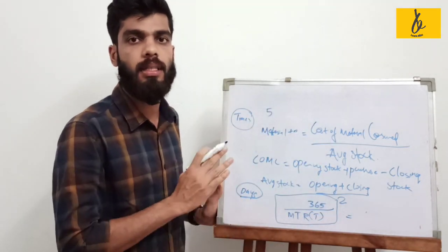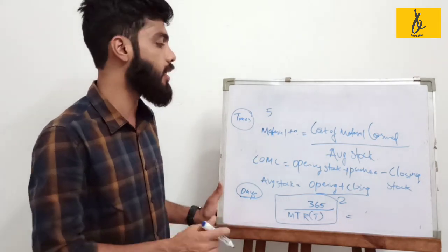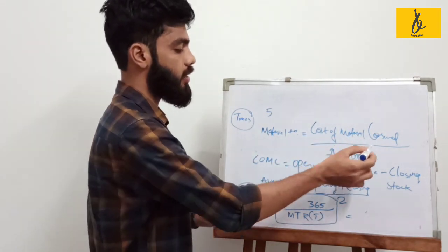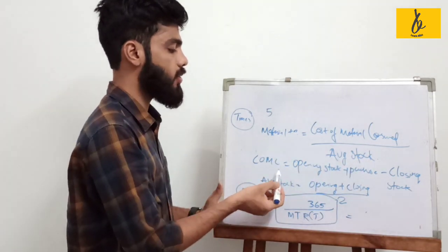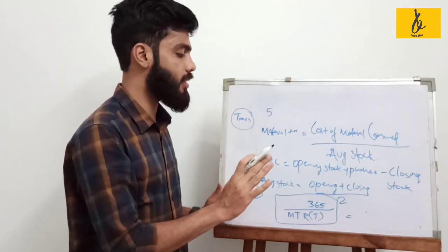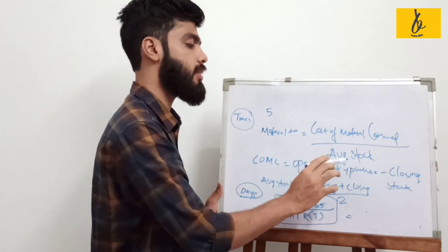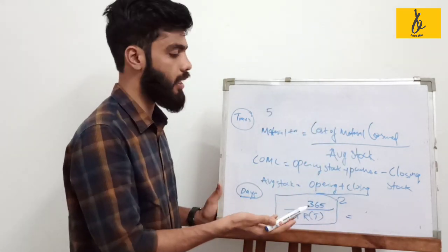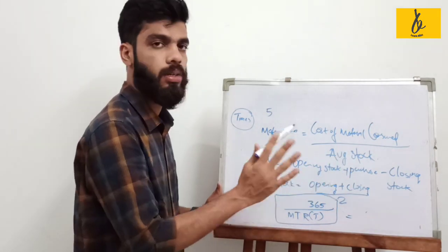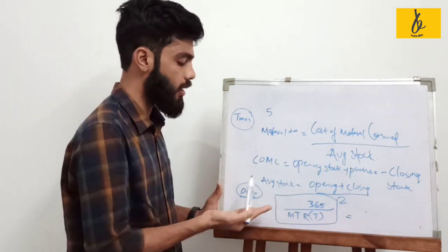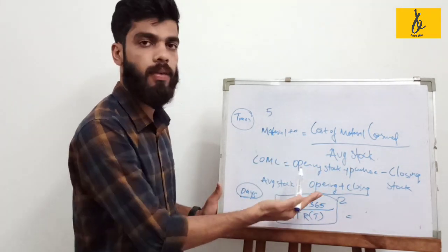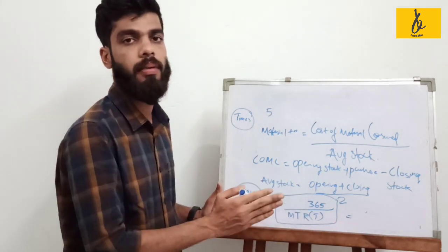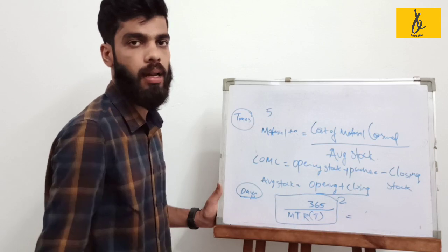Cost of material consumed equals opening stock plus purchases minus closing stock. Average stock is opening stock plus closing stock divided by 2. The number of days is 365 divided by the material turnover ratio.